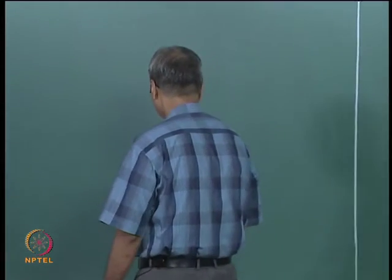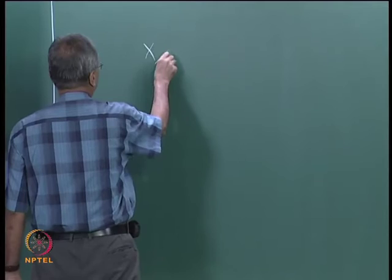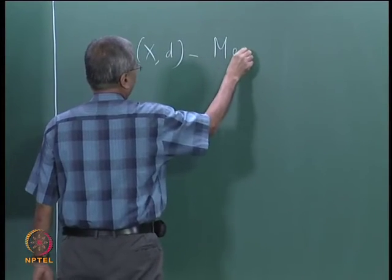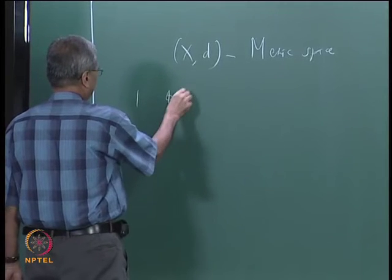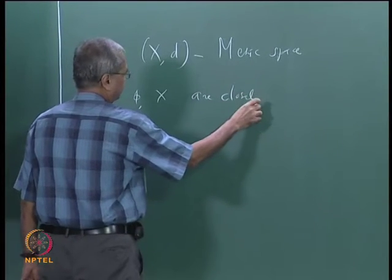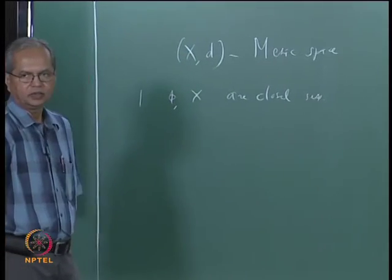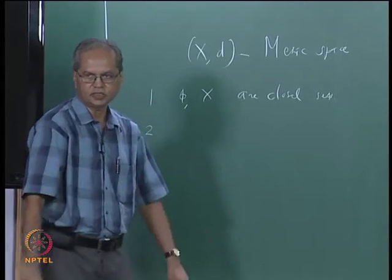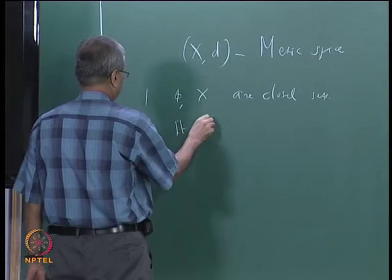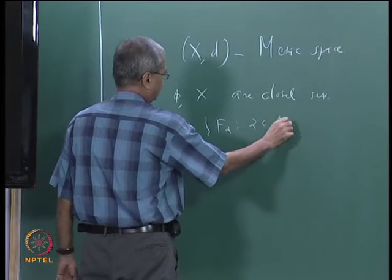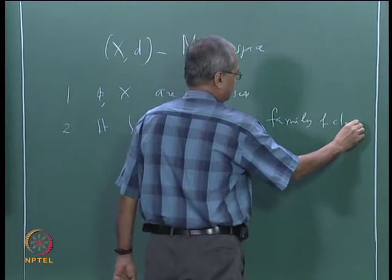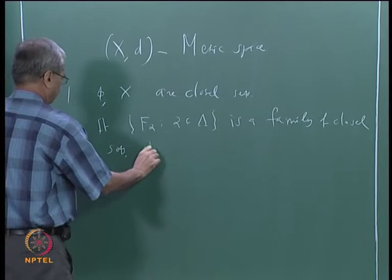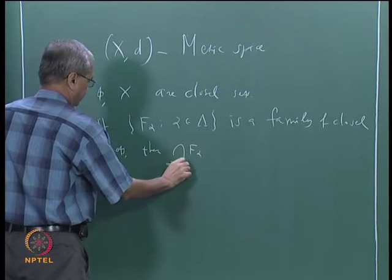We were discussing the properties of closed sets in the last class. Let us recall a few properties. In a metric space, the first thing we saw was that the empty set and the full space X are closed sets. If we take any arbitrary family of closed sets, then its intersection is also closed. So if F_alpha, alpha in some indexing set lambda, is a family of closed sets, then the intersection of F_alpha over alpha in lambda is closed.